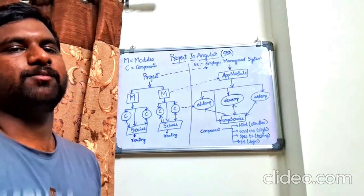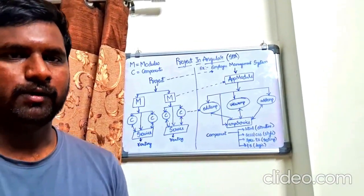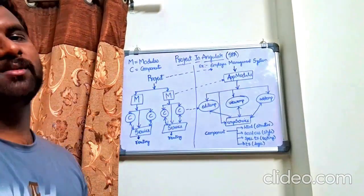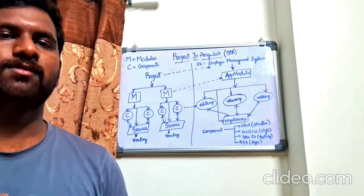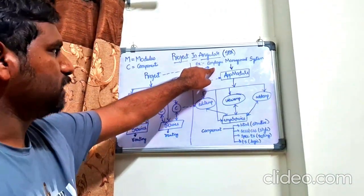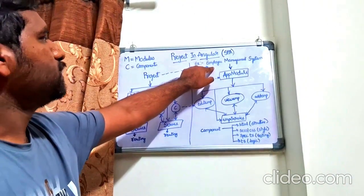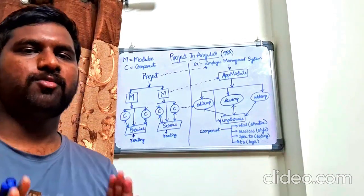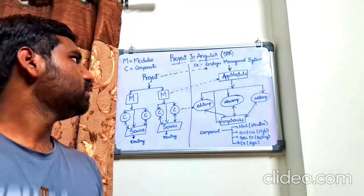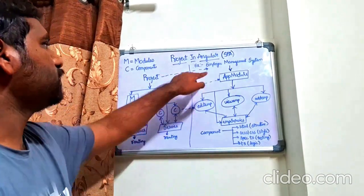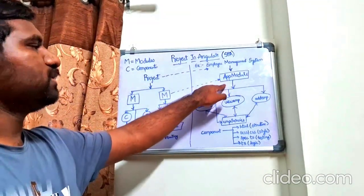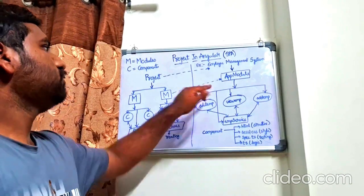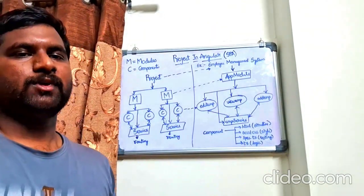Each module basically consists of these components, the service, and the routing file. Let me explain with a simple example — the Employee Management System, which is the project we are going to build in the next upcoming video. As you can see, this is the project name: Employee Management System. It is a small project using simple CRUD operations, placed inside the app module. By default, the app module is created inside the Angular project whenever we create one.